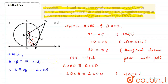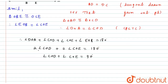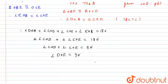Looking at the figure, angle COE plus angle COD together form angle DOE. Therefore, angle DOE equals 90 degrees, which is exactly what we had to prove. Hence proved.